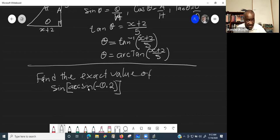See, find the exact value of sine, parenthesis, arc sine, bracket, negative 0.2, close parenthesis. So, what you need to do is you have to evaluate the inner bracket, inner bracket first, which is the arc sine.